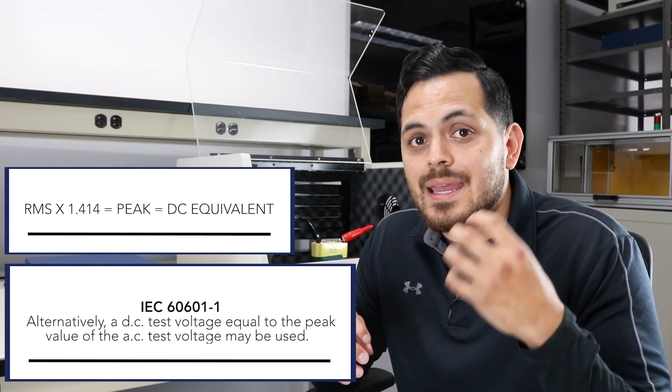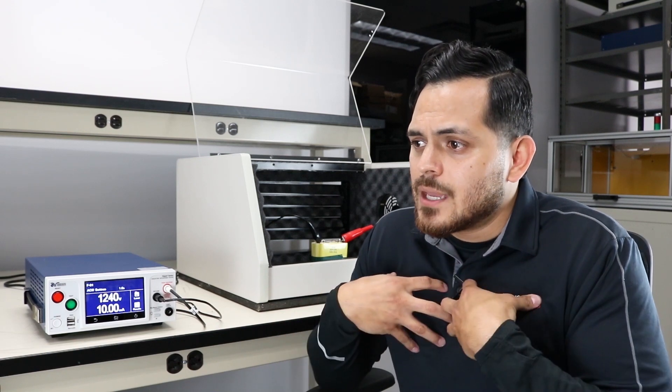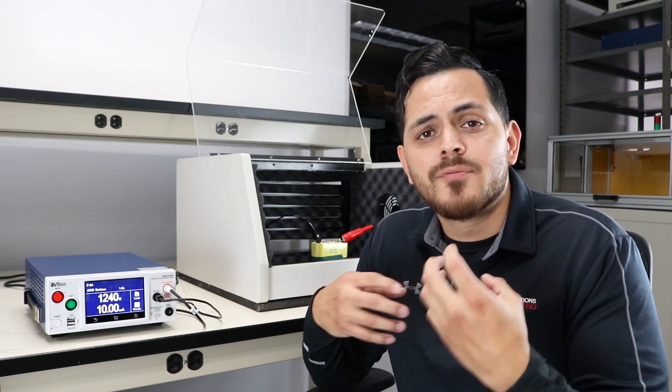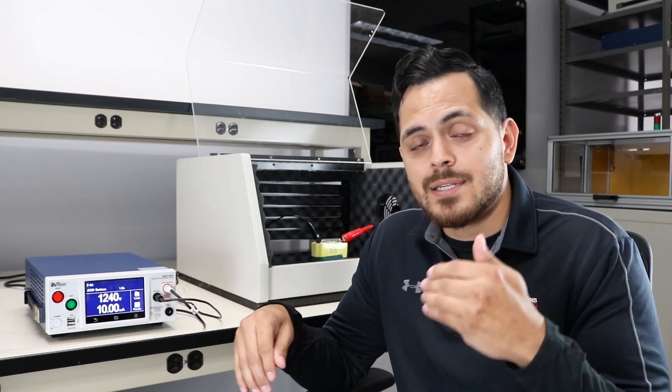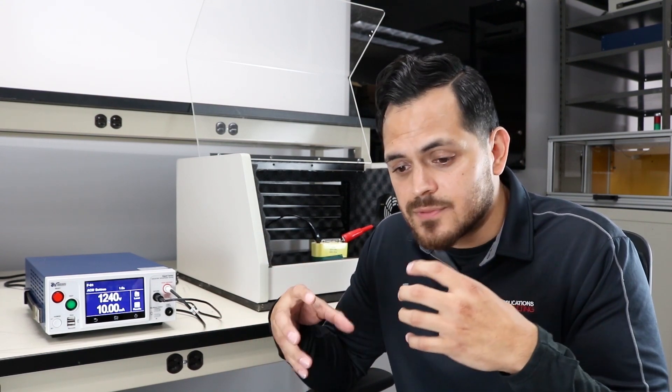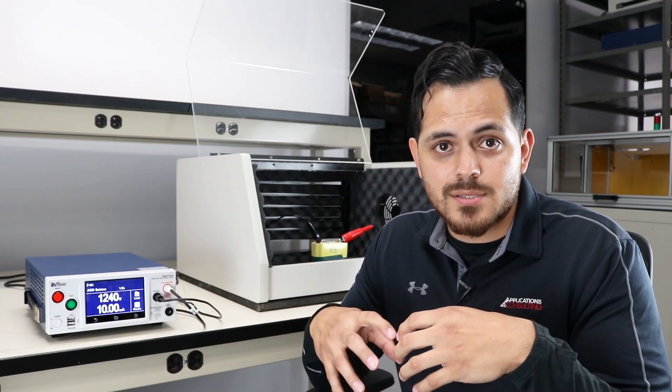What that's saying is if I was running a 1200 volt AC hypotest, I can't just turn it into DC at that same value. I need to make sure that insulation is feeling the exact same stress as it would in the AC hypotest, so I need to use that peak value for my DC hypotest.